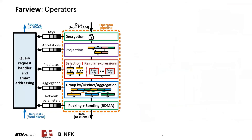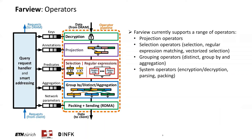An operator pipeline can contain one or more operators that provide partial query processing. As done in conventional query processing, operator pipelines are constructed from individual blocks implementing a given operator and provide a standard interface to combine them into pipelines. Farview currently supports a range of operators, including projection operators that reduce the number of return columns, selection operators that filter data according to a collection of predicates, grouping operators that combine tuples and can perform aggregation using hashing — which can be quite efficient in FPGAs — and system operators that can perform additional processing such as the encryption operator shown, which can enforce security measures important in these cloud-related systems. The modular nature of these pipelines and the reconfigurability of FPGAs allows the list of operators to be easily extended at any point.